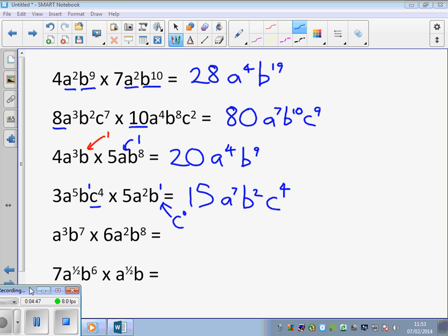Moving on, in the next question, we have another anomaly. The first term is missing the coefficient. That is because the coefficient is 1. It is absolutely not 0. The coefficient is 1. 1 times 6 is 6. And we have A to the power of 5, B to the power of 15.